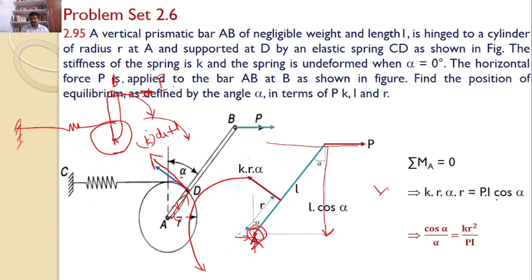Then, I can write the equation cos alpha by alpha is equal to K R square by P L. This is the equation to satisfy the equilibrium condition. This is the answer for the given problem.